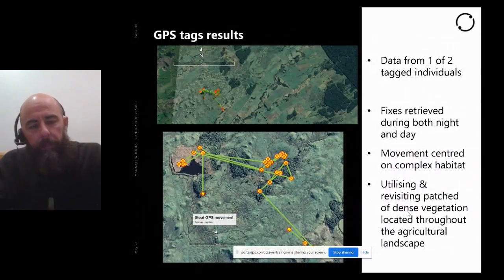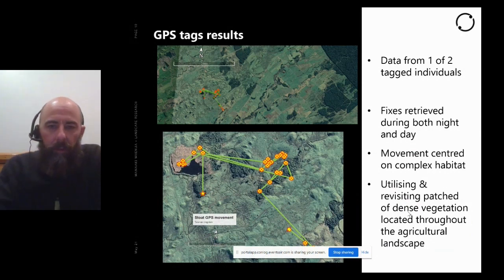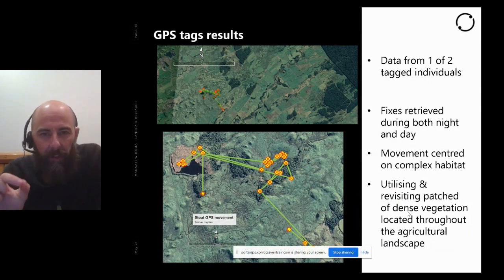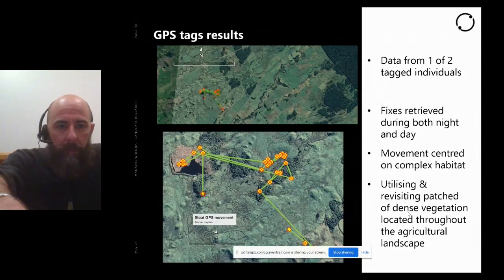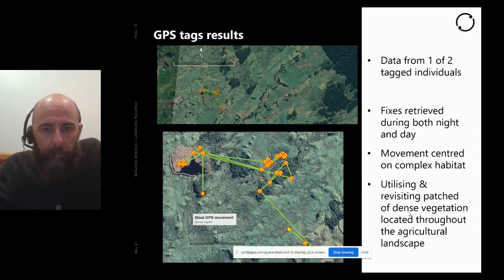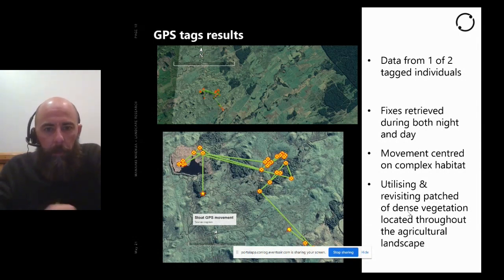We GPS-tagged two individuals. One was re-caught the next day with the tag already ripping off — we removed it entirely. Stoats can bend around into a U-shape and grab anything slightly protruding from their neck, so we think it just spent all night ripping it off. We did get one individual tagged for about 10 days. The top image, zoomed out, shows the national park forest in the top right corner, with the rest being patchy farmland with some forest and waterways.